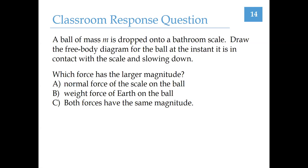Here's another question — pause the recording and please answer it on Gradescope. We've got two forces acting on this ball: a normal force that the scale exerts on the ball and a weight force that the Earth exerts on the ball. We need to determine which one has a larger magnitude. We just said the net force is not zero, so these two forces cannot have the same magnitude — C is incorrect. We also determined the net force points up, which means the upward force must have a larger magnitude than the downward force. So the correct answer is A: the normal force of the scale on the ball is going to have a larger magnitude than the weight force.